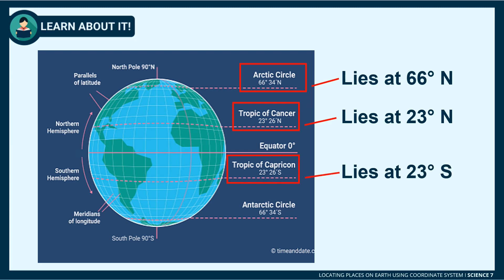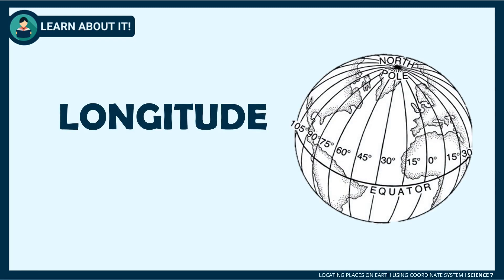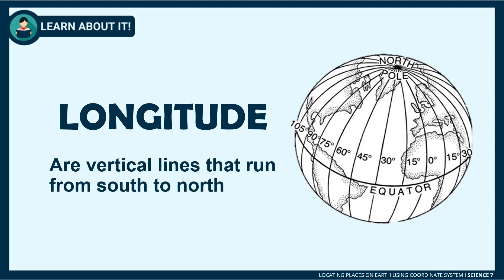The Antarctic Circle is the latitude 66 degrees south; any locations falling south of this latitude are said to be in the Antarctic Circle. The Tropic of Capricorn is the latitude that lies at 23 degrees south of the equator. It is the southernmost position on the globe where the sun is directly overhead during the December solstice.